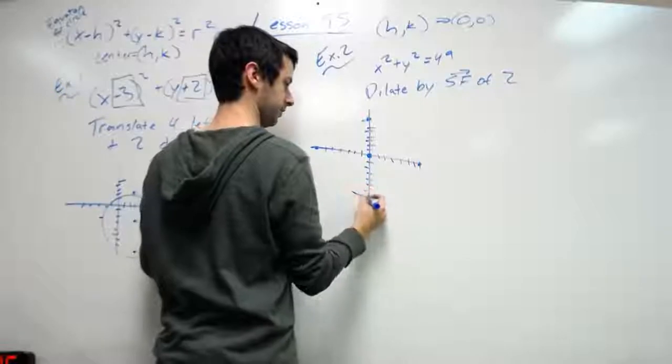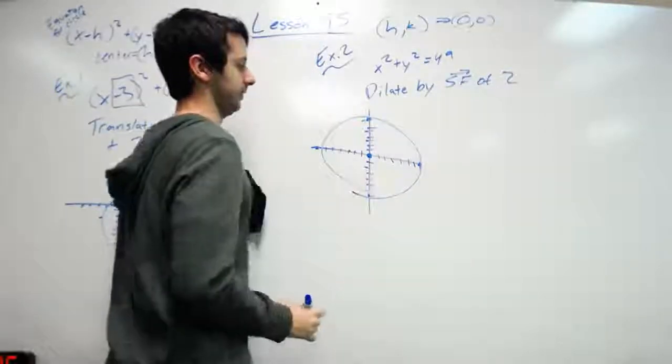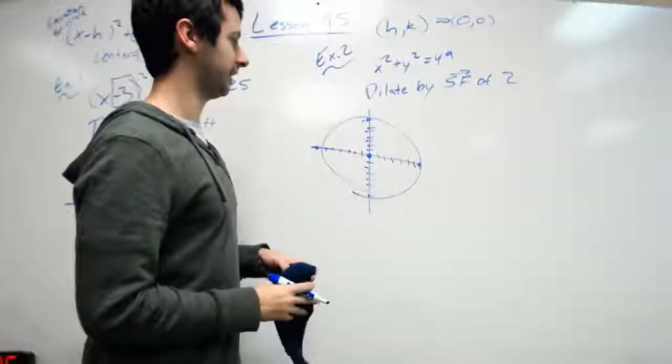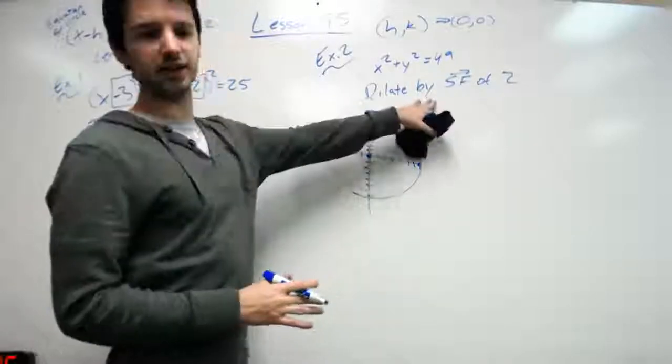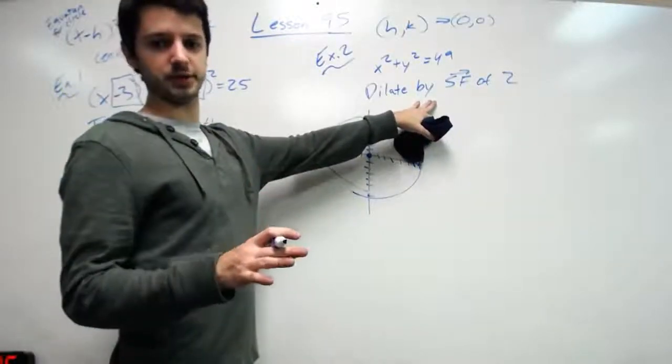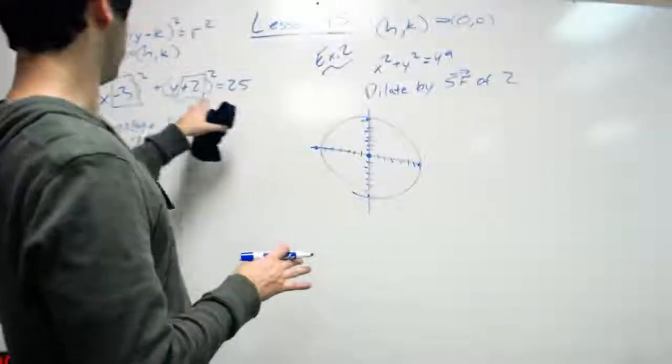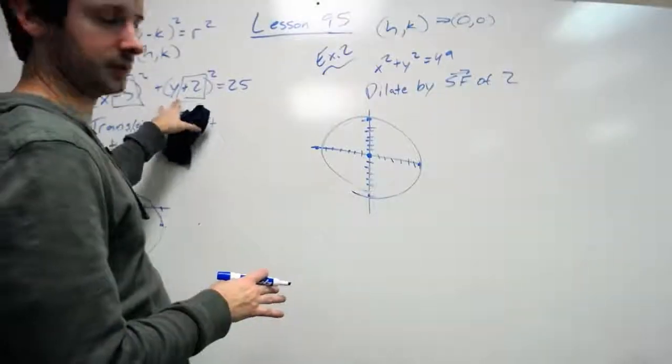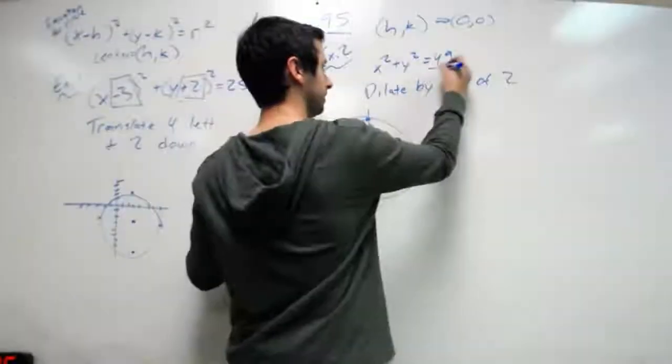So here's all my coordinates, something like that. It wants me to dilate this by a scale factor of two. When I dilate, I don't do anything with the center. When I translate, I use the center. But when I dilate, I use the radius.